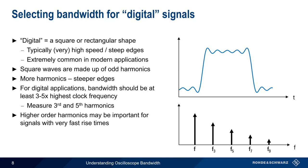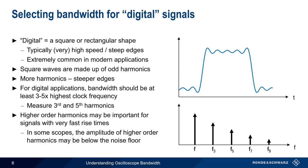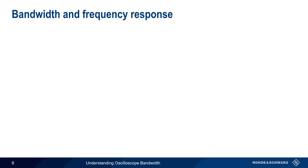Keep in mind, however, that the amplitudes of harmonics decrease as their order increases, and in some scopes the amplitude of these very high order harmonics might fall below the scope's noise floor and therefore be unmeasurable.